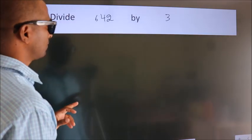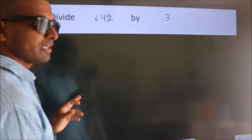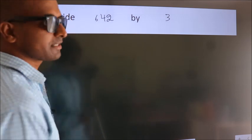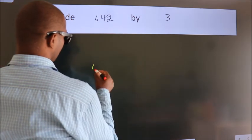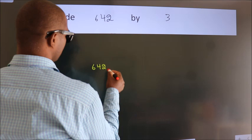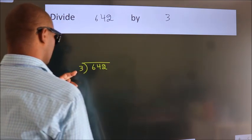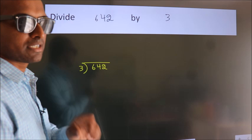Divide 642 by 3. To do this division, we should frame it in this way: 642 here, 3 here. This is your step 1.